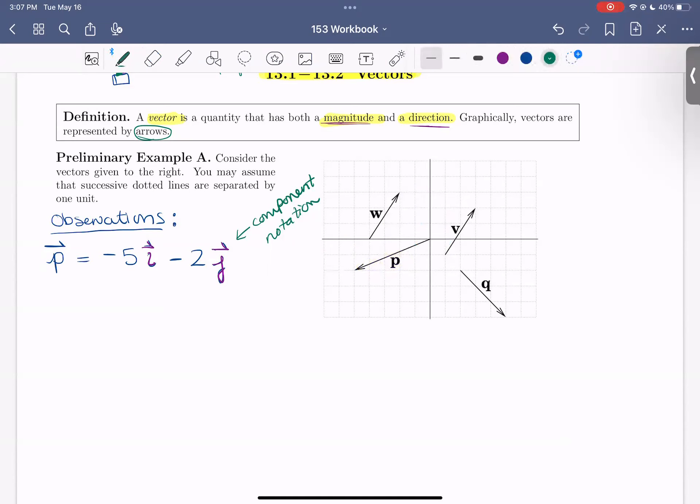All right. So let's take a look at Q. So we're going to start here and end here. So to write the component notation for Q, we're going to go to where we start, where the end of the arrow is, or maybe the beginning of the arrow. And we'll see how far do we move in each direction. We're going to move over 1, 2, 3 to the right and 1, 2, 3 down. So we'd have positive 3i minus 3j.